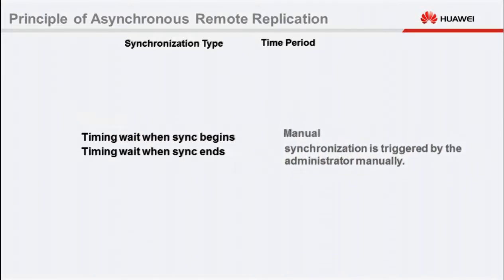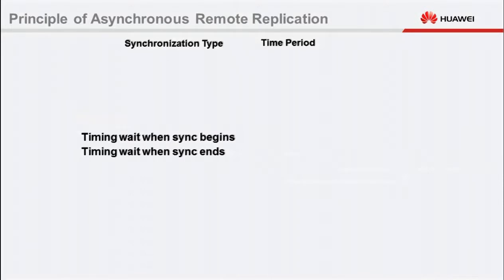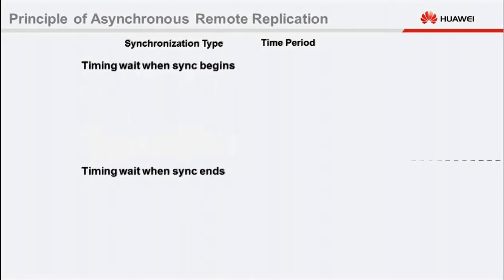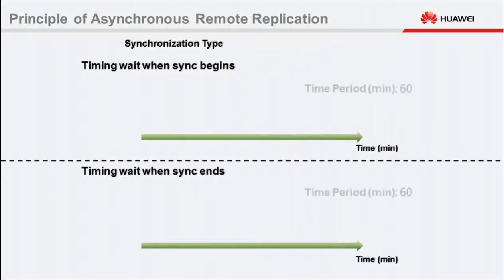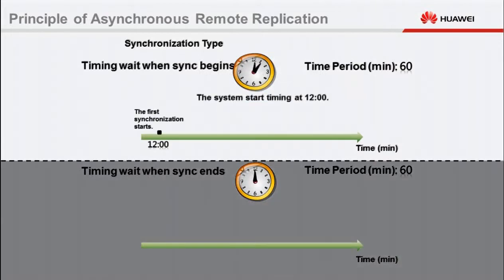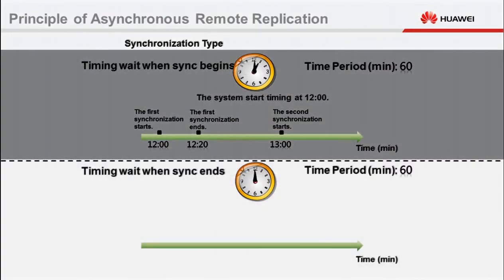In manual mode, synchronization is started by an administrator. Let's focus on timed wait when synchronization begins and timed wait when synchronization ends. If the initial synchronization starts at 12 o'clock PM, the synchronization process takes 20 minutes, and the synchronization period is 60 minutes. If you select timed wait when synchronization begins, the storage system starts timing when the initial synchronization starts. Completion of the synchronization does not affect the timing. At 1 o'clock PM, 60 minutes after the initial synchronization starts, the storage system starts the second synchronization.